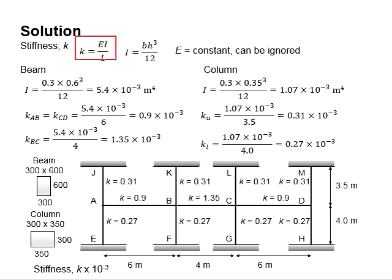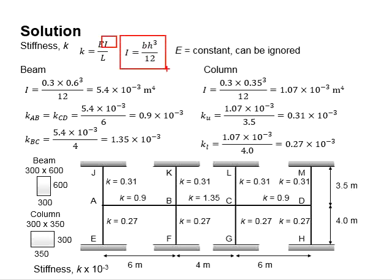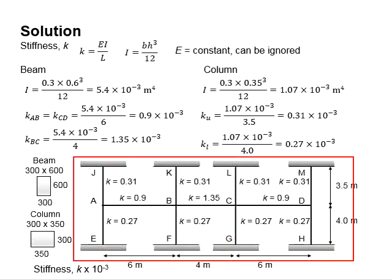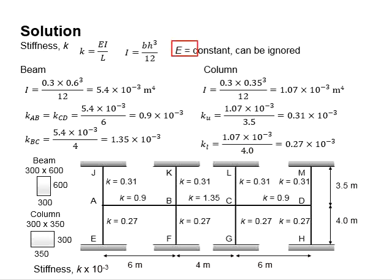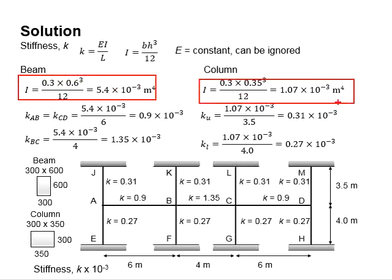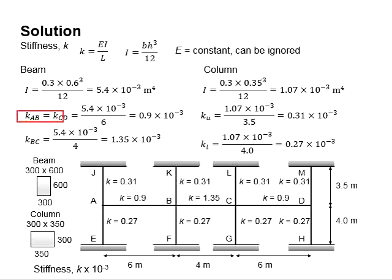The stiffness k is obtained by the equation k = EI per L. The second moment of inertia is obtained as BH³ per 12. Since the entire frame is made of reinforced concrete, E is constant and may cancel out, so it can be ignored. The second moment of inertia for the beams and columns are calculated, and the k for the beams are determined by their respective effective lengths.